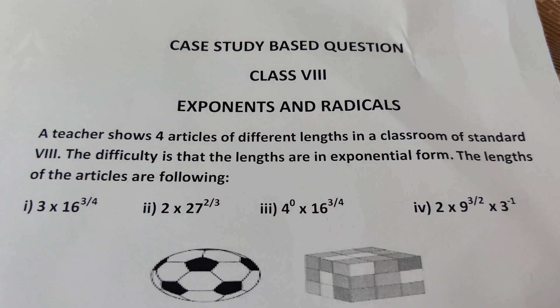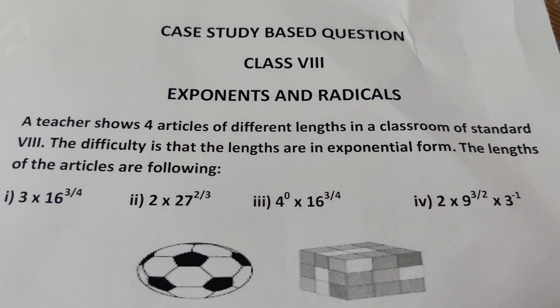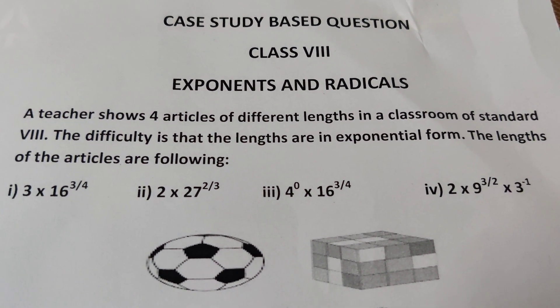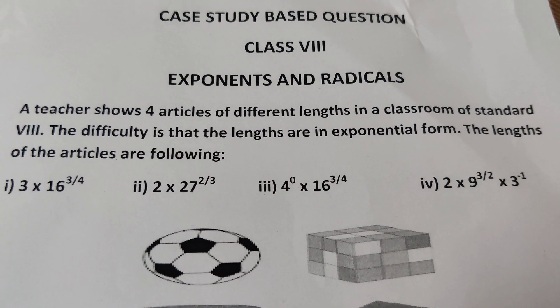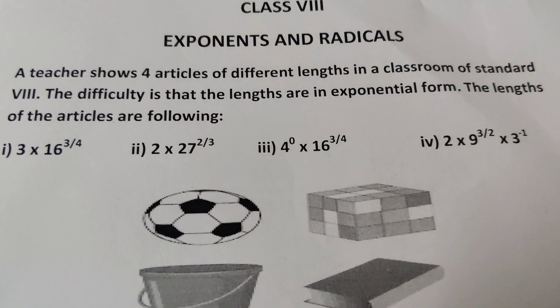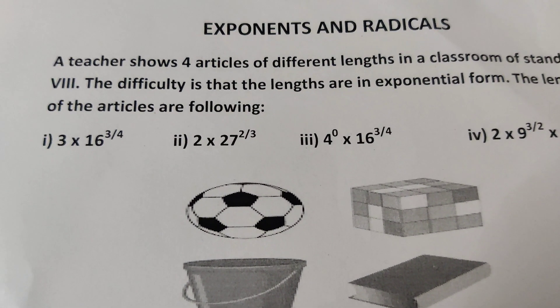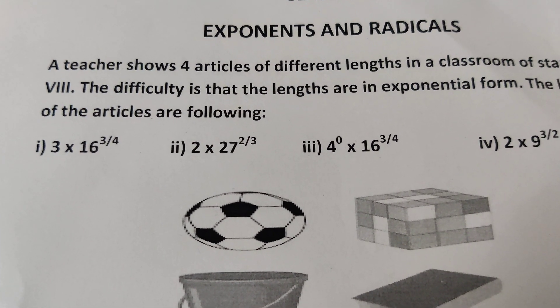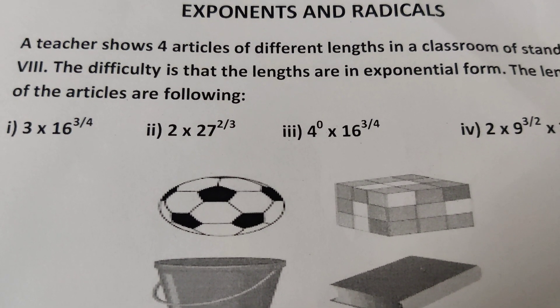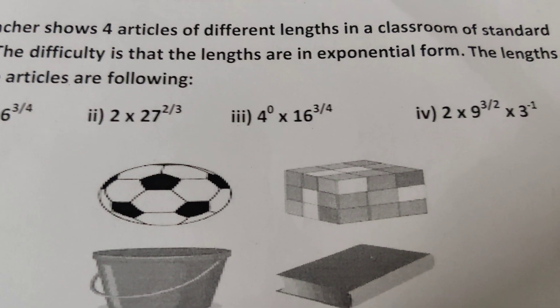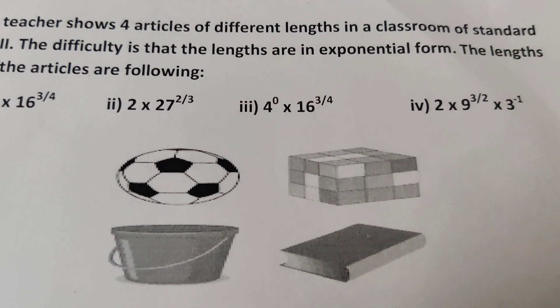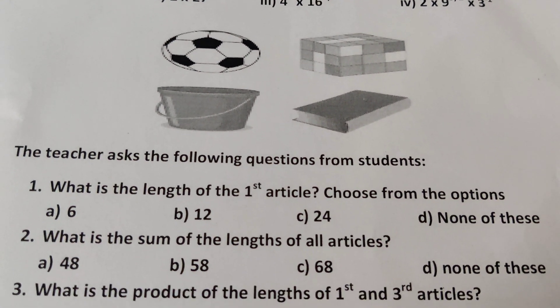Case study based question for Class 8, chapter is Exponents and Radicals. The case study is this: A teacher shows four articles of different lengths in a classroom of standard 8. The difficulty is that the lengths are in exponential form. The length of the articles are the following: first is 3 × 16^(3/4), second is 2 × 27^(2/3), third is 4^0 × 16^(3/4), and fourth is 2 × 9^(3/2) × 3^(-1). The teacher asks the following questions from students.